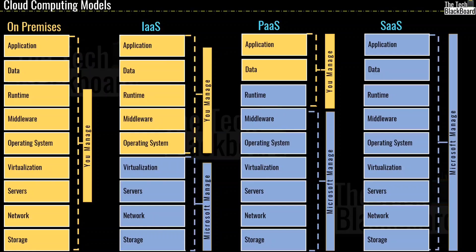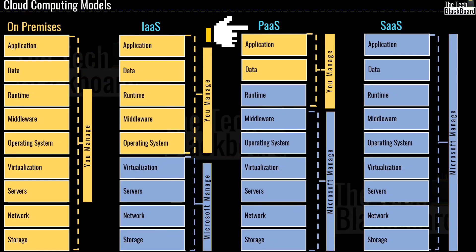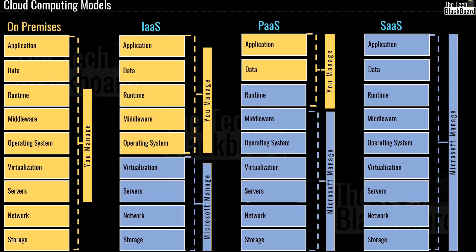In the last episode, I gave you an overview of IaaS or Infrastructure as a Service, PaaS or Platform as a Service, and SaaS which is Software as a Service. In this episode, I present a different perspective and compare each of these cloud computing models side by side. We will also understand how they are different from on-premises data centers. If you missed watching part 2 of this series, it's a must-watch. The link is flashing in the I button on the top right corner and also available in the description box.